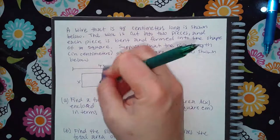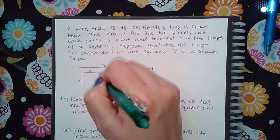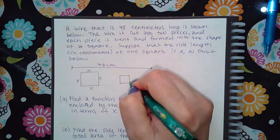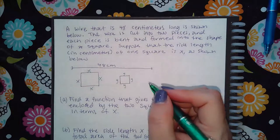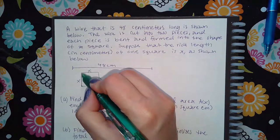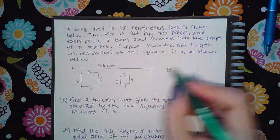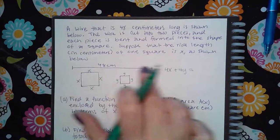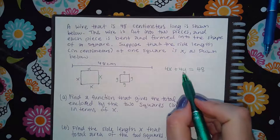Since it's a square, all four sides are x, so the perimeter of the first square is 4x. The second square has side length y, so its perimeter is 4y. Together they use the entire 48 cm wire: 4x + 4y = 48.